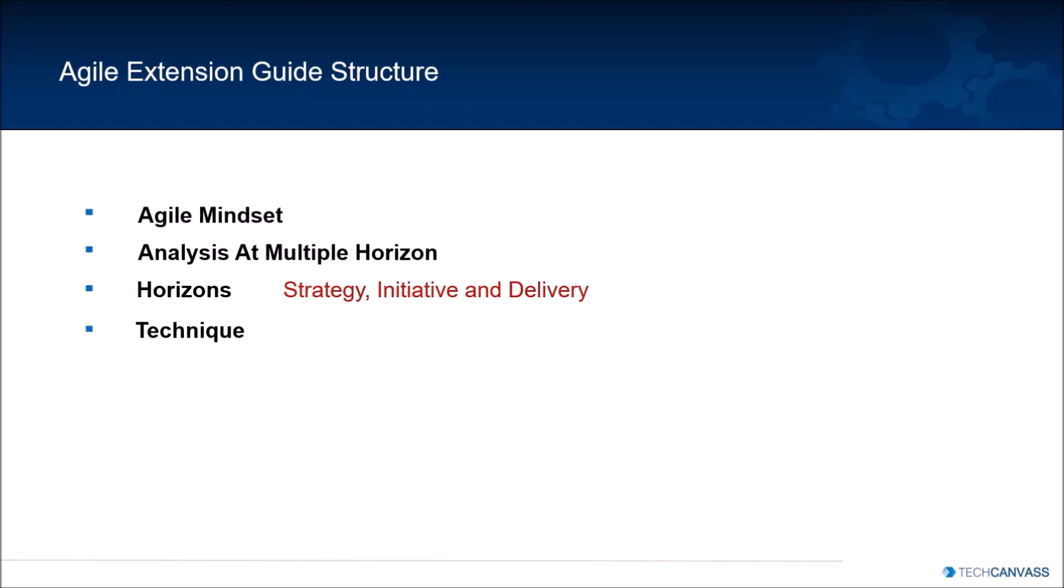Next, a technique chapter which contains 24 techniques used in Agile environment. Then, the appendix section talks about the glossary and a few additional information of the guide on what changes are in effect from the previous version of the guide.